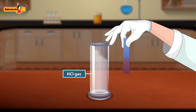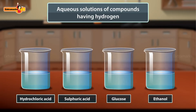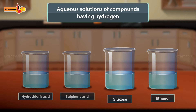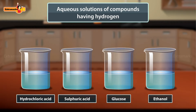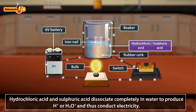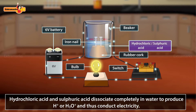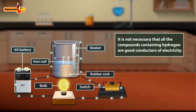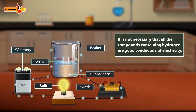Let us take some compounds having hydrogen in them, such as hydrochloric acid, sulfuric acid, glucose, and ethanol, and find whether they conduct electricity or not. Hydrochloric acid and sulfuric acid dissociate completely in water to produce H⁺ or hydronium ions and thus conduct electricity, while glucose and ethanol do not conduct electricity as they do not dissociate completely in water. So it is not necessary that all compounds containing hydrogen are good conductors of electricity.